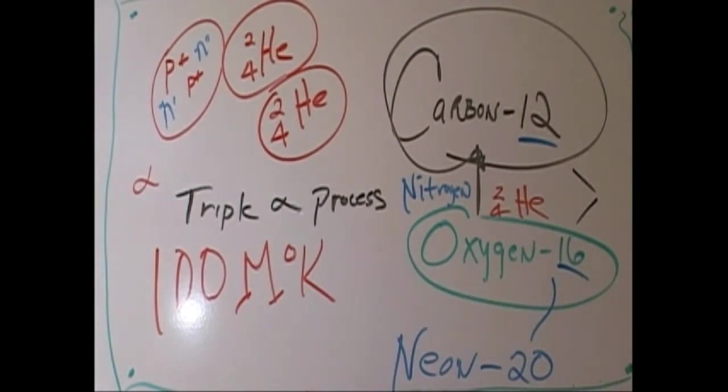Triple alpha. Three heliums. Two heliums will not stick together. They'll fall apart so fast that if another helium doesn't hit it, carbon won't be formed. The element would be called beryllium-8. But it doesn't happen.